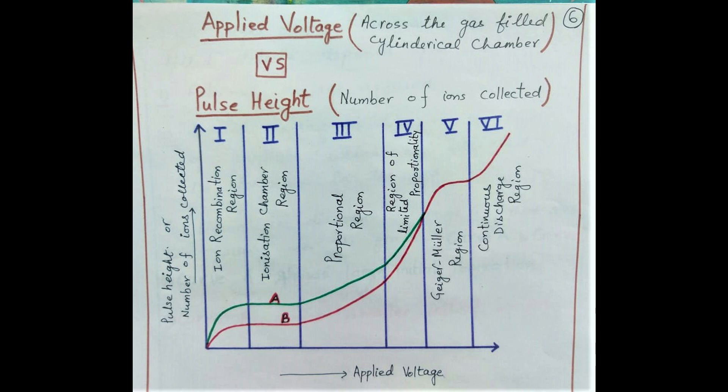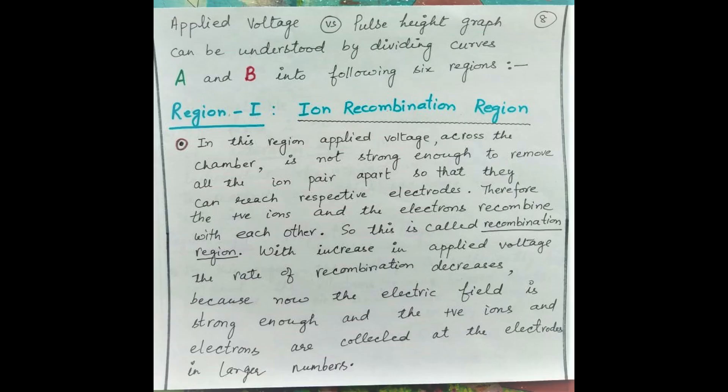Region 1 is called the ion recombination region. In this region the applied voltage is very low, and as any ionizing particle or radiation passes through the gas-filled chamber, ion pairs are created. But because the potential difference between the electrodes is very low, the positive ions and electrons do not get enough energy to reach their respective electrodes and they readily recombine. With an increase in applied voltage, the rate of recombination decreases because the electric field is strong enough to move ions and electrons faster towards cathode and anode.